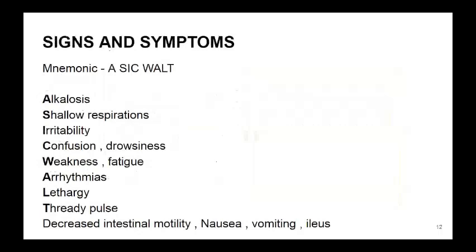Moving on to signs and symptoms, we have another mnemonic: A SICK WORLD. A for alkalosis, S for shallow respirations, I for irritability, C for confusion and drowsiness, W for weakness and fatigue, A for arrhythmias, L for lethargy, T for thready pulse. There is also decreased intestinal motility, nausea, vomiting, and ileus.